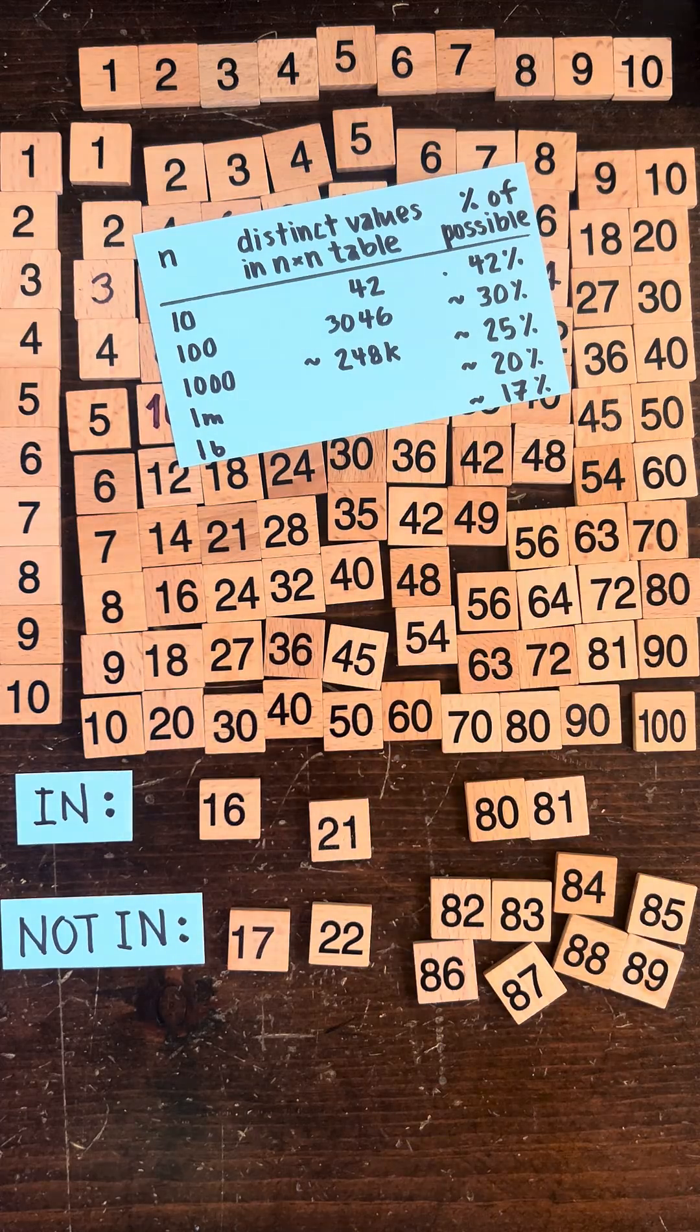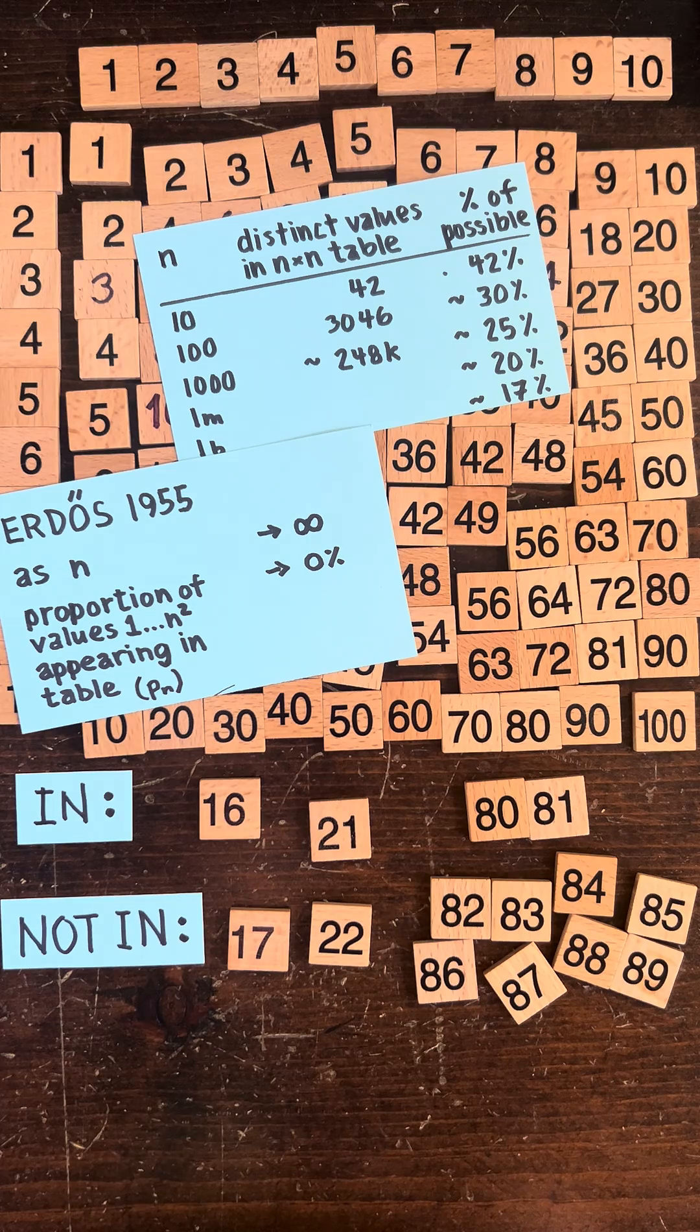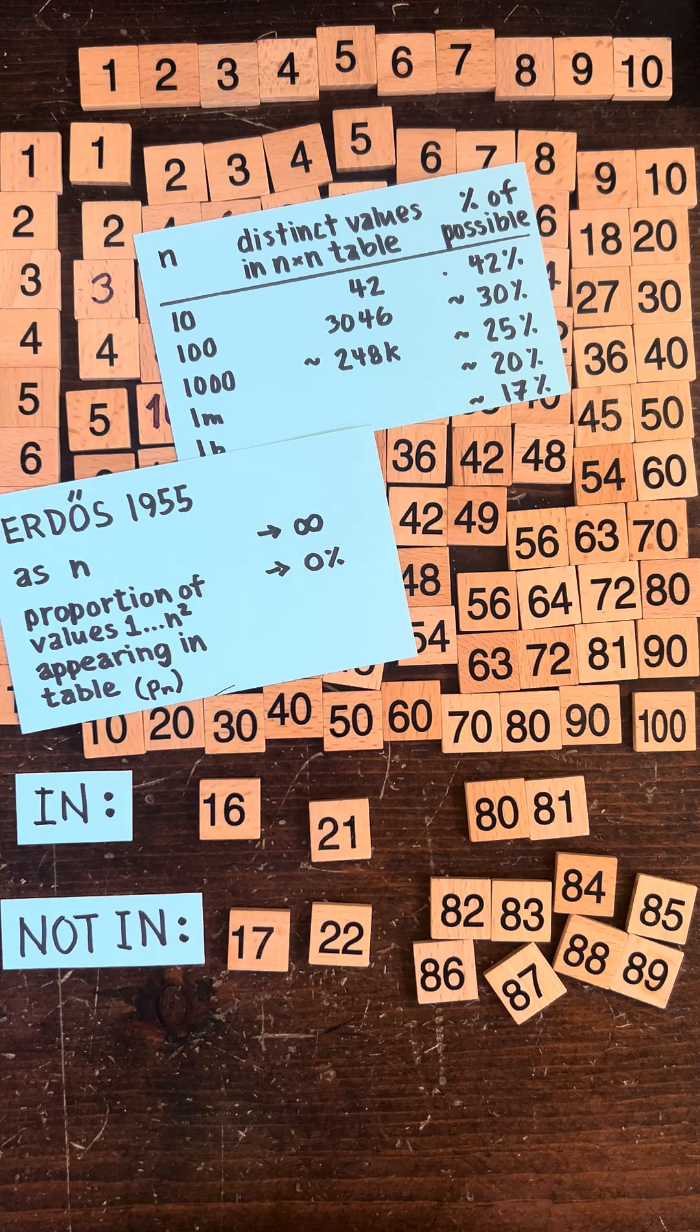And in 1955 Erdős showed that as n goes to infinity, the proportion of values between 1 and n squared appearing in the table goes to 0 percent.